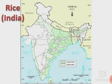In this map you can see the dark area showing the major rice growing areas in India, which includes a large part of the coastal region. The light colored area marks minor areas where rice is grown.